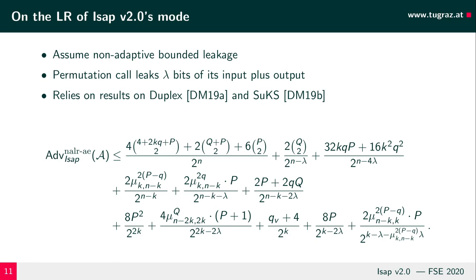What the bound nicely shows, marked in red, is the direct effect of the leakage lambda on the advantage an attacker has. Hence, to limit the advantage of an attacker, it is advisable to keep the leakage small.